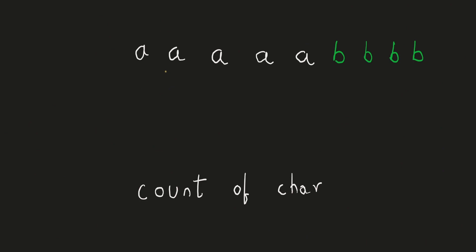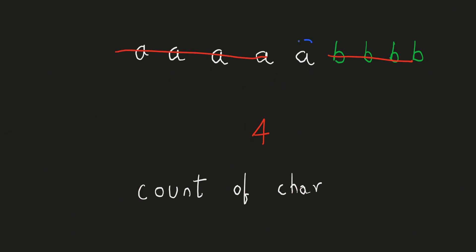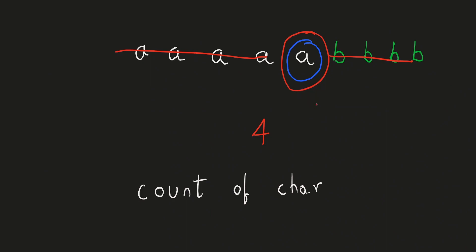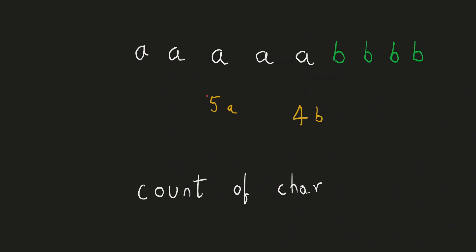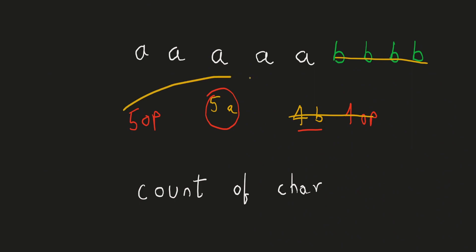Now let's take the example with multiple characters. We have 5 a's and 4 b's. When we apply the operation 4 times, 4 b's are eliminated and 4 a's are eliminated. Since we still have one a remaining, b could never have been part of the last answer. Any character deleted before the string reaches its final state can never be part of the answer. Since the count of a is 5, it is removed after 5 operations, while b with count 4 is removed after 4 operations — so b can never be part of our answer.